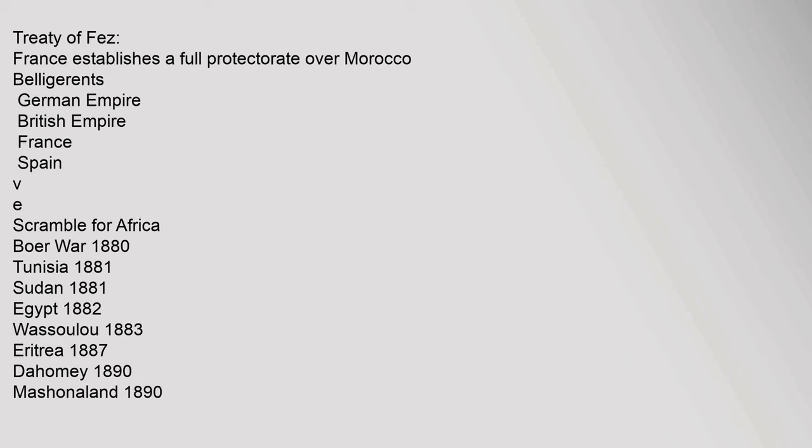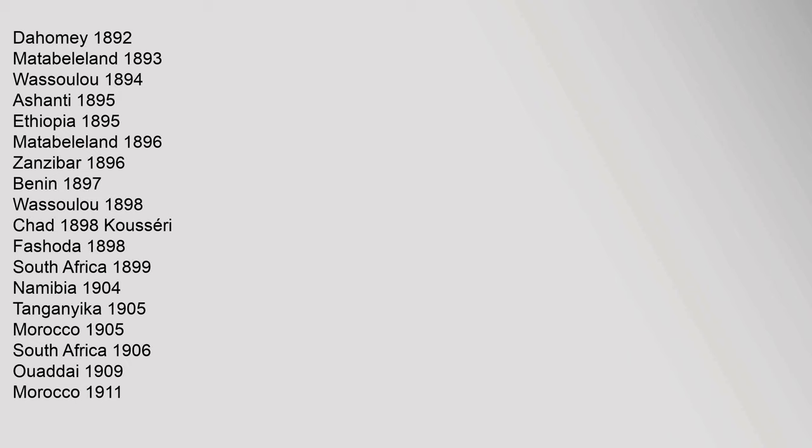Colonial conflicts in Africa: Dahomey 1892, Matabeleland 1893, Wasoulou 1894, Ashanti 1895, Ethiopia 1895, Matabeleland 1896, Zanzibar 1896, Benin 1897, Wasoulou 1898, Chad 1898, Fashoda 1898, South Africa 1899, Namibia 1904, Tanganyika 1905, Morocco 1905, South Africa 1906, Wadai 1909, Morocco 1911.